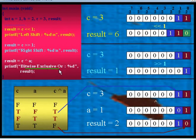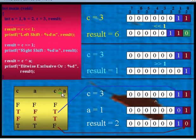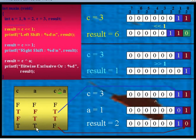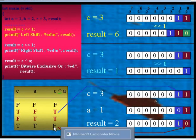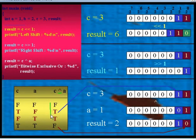Now let us study the bitwise exclusive OR operator. Before studying this operator, let us see its truth table. With variables C and A: false XOR false gives false, false XOR true gives true, true XOR false gives true, and true XOR true gives false.